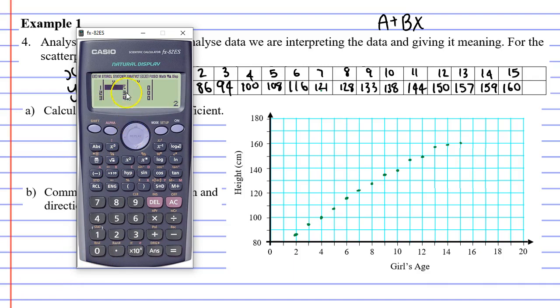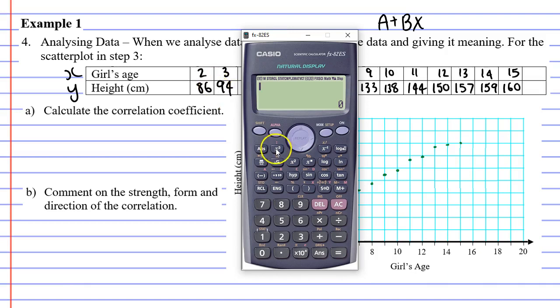So we're now moving to the Y column, which is the second row, and we'll enter these values in. So 86 equals 94 equals, and I'll just pause and finish it off. So I've entered the second row into the Y column, and once again, I can go through and check it just in case I've made any errors here. All right, we'll press AC to get out of the screen, and we want to find the correlation coefficient.